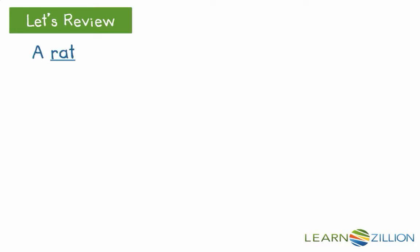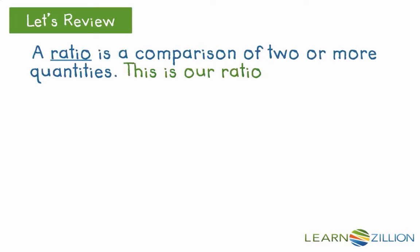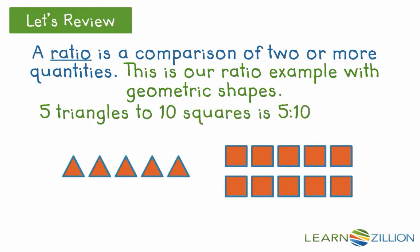Let's review. A ratio is a comparison of two or more quantities. If we have 5 triangles and 10 squares, the ratio of triangles to squares is 5 to 10, or 1 to 2 if we simplify the ratio.